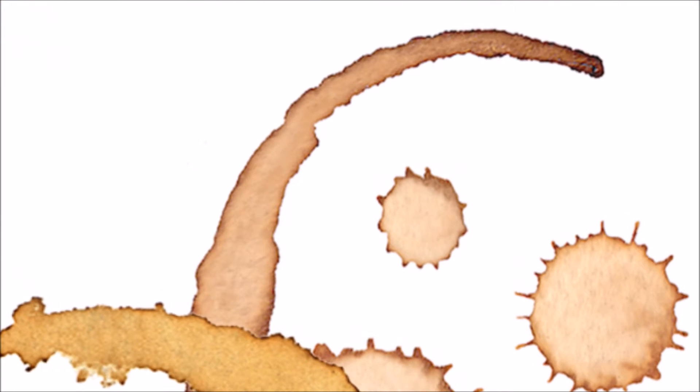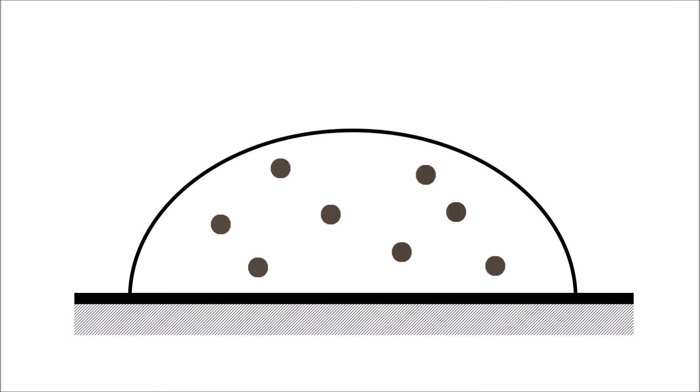You can see that the edges of coffee stains are darker than the inside. This means that something causes the solute to be separated from the liquid it was dissolved in.